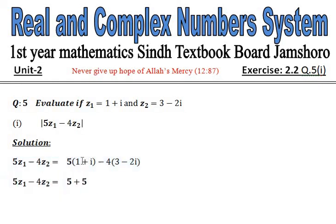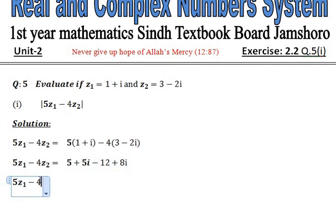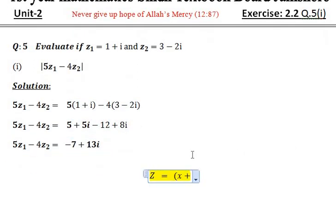Now simplifying it: 5 into 1 equal to 5, 5 into i equal to 5i, minus 4 into 3 equal to minus 12, and minus into minus equal to plus, 4 into 2i equal to 8i. Now again simplifying it, you can see that 5 and minus 12, so 5 minus 12 equal to minus 7, 5i plus 8i equal to 13i.